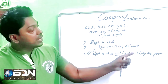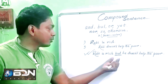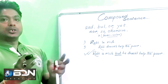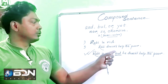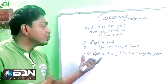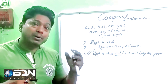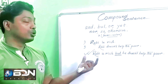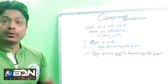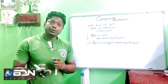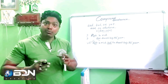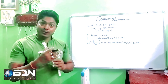Ruby is rich, but he doesn't have good people around him. These two clauses are connected with the coordinating conjunction 'but.' So: Ruby is rich, but he doesn't have good people.